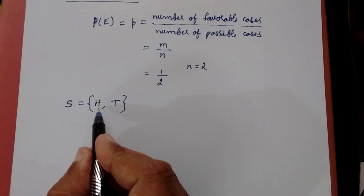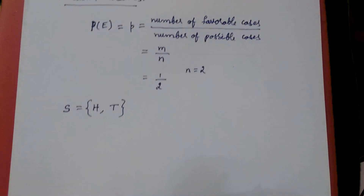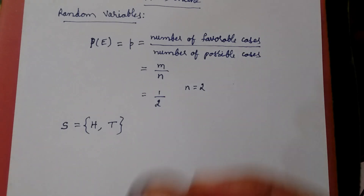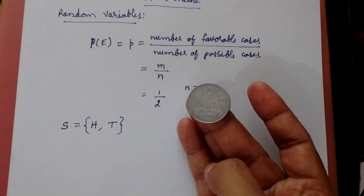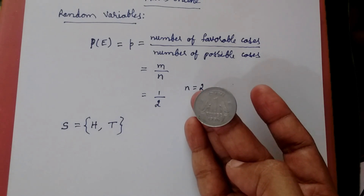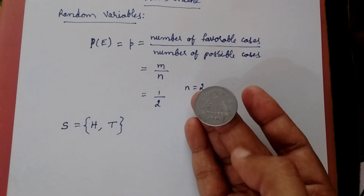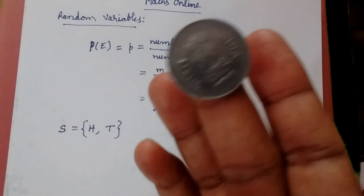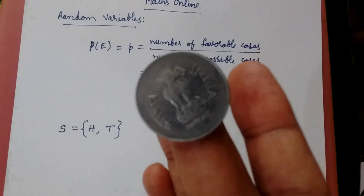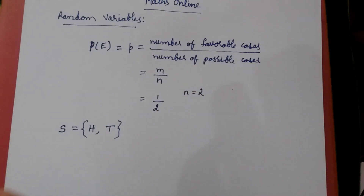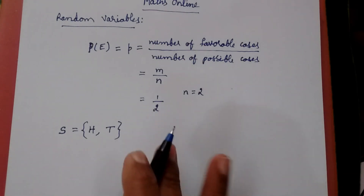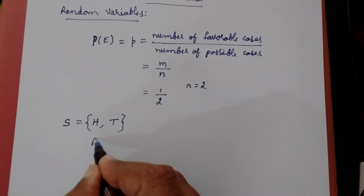Now consider each of these outcomes H and T. Suppose you are tossing a coin under the same circumstances — the same time, same surroundings, same environment — but once you get a head and another time you get a tail. The same surrounding and same atmosphere, but the outcomes are different. Such types of experiments are called random experiments.